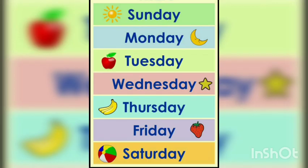How many days? Seven days. Say with ma'am — Sunday, Monday, Tuesday, Wednesday, Thursday, Friday, Saturday. So how many days' names did we learn? Seven. One week me kitne days hote hain? Seven days — Sunday, Monday, Tuesday, Wednesday, Thursday, Friday, and Saturday. These are the seven days' names. Very good everyone — so that's all for today. Thank you class, bye bye.